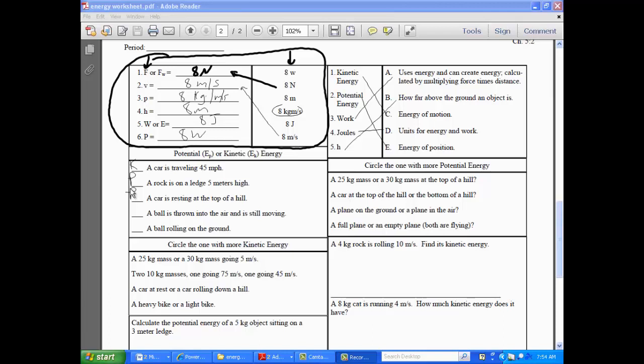A car is resting on top of a hill. Potential. Anytime it mentions height, it's potential. A ball is thrown into the air and it's still moving. Kinetic. Good. A ball is rolling on the ground. Kinetic. Fantastic. Nice job. So, questions on those?